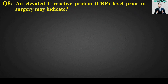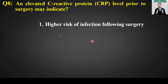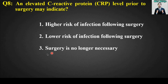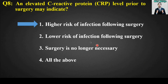MCQ number eight: An elevated C-reactive protein (CRP) level prior to surgery may indicate what? Options: higher risk of infection following surgery; lower risk of infection following surgery; surgery is no longer necessary; all of the above. The right answer is option number one — an elevated CRP level prior to surgery may indicate a higher risk of infection following surgery.